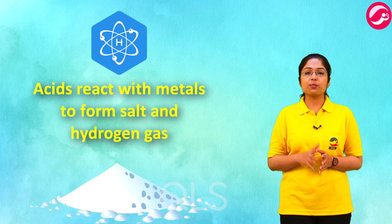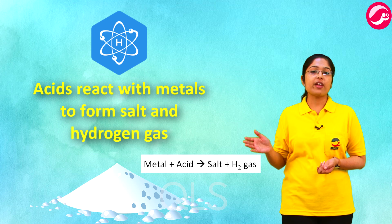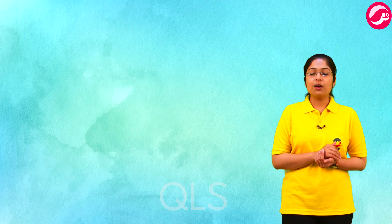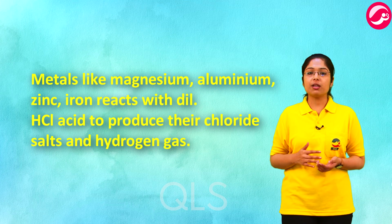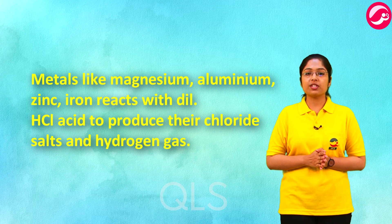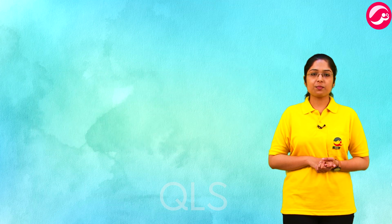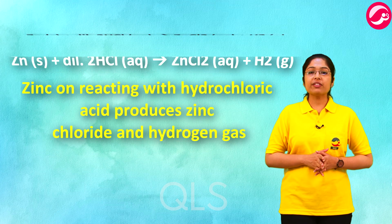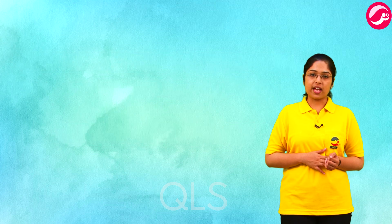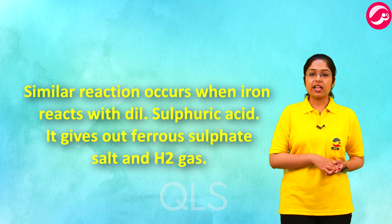Acids react with metals to form salt and hydrogen gas. Metals like magnesium, aluminum, and iron react with dilute hydrochloric acid to produce their chloride salts and hydrogen gas. Zinc on reacting with hydrochloric acid produces zinc chloride and hydrogen gas.